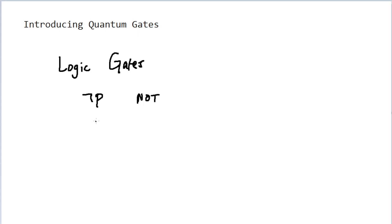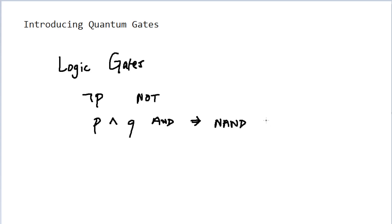Another instance of a logic gate between our P and Q values would be: what happens if I only want to evaluate to true when both of these values — or all of my values — are true? We can use the AND operator in this case, where it is true when both statements are essentially true, and false otherwise. There is also another operator known as NAND, or NOT-AND, where it is the equivalent of taking the NOT of some AND statement.